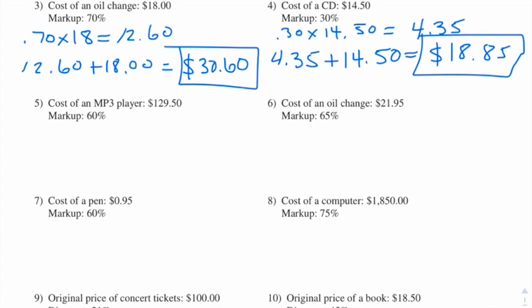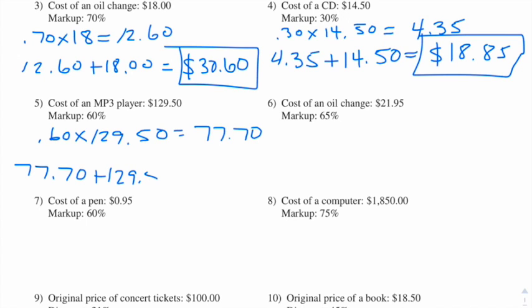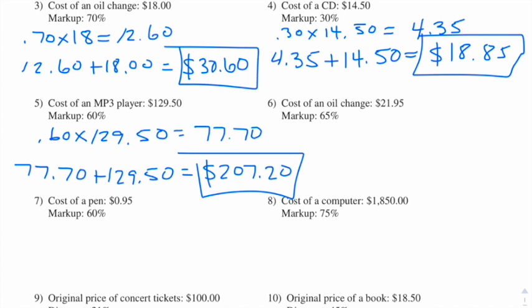Number five: the cost of an MP3 player is $129.50 and the markup is 60%. So we're taking 60% of $129.50 — that's 0.6 times 129.5 — and we get $77.70. So we take $77.70 plus $129.50 and we get $207.20.